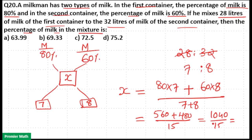The answer is 560 plus 480 divided by 15, which equals 1040 divided by 15. That is 69 remainder 5, and 50 divided by 15 gives approximately 0.33. So the percentage of milk in the mixture is 69.33%, and option B is your answer.